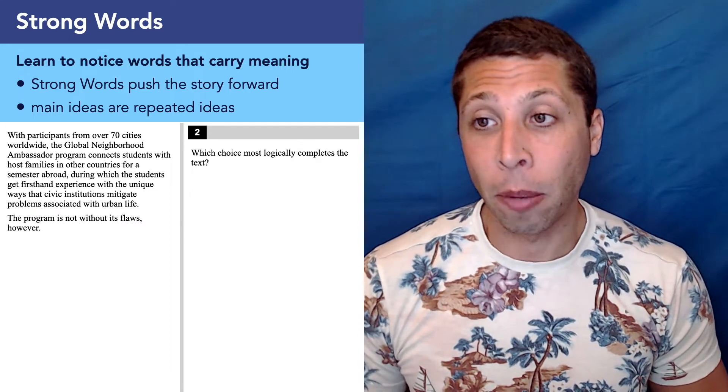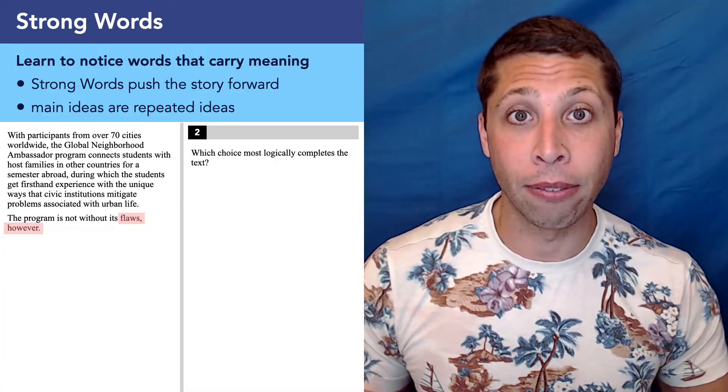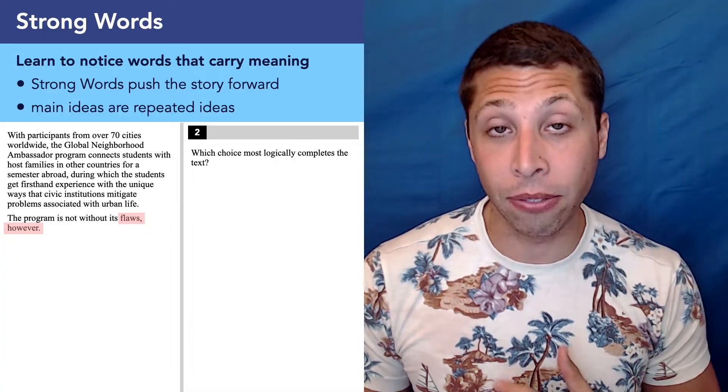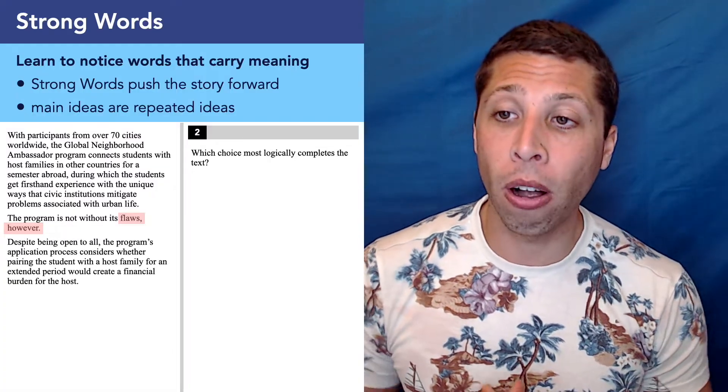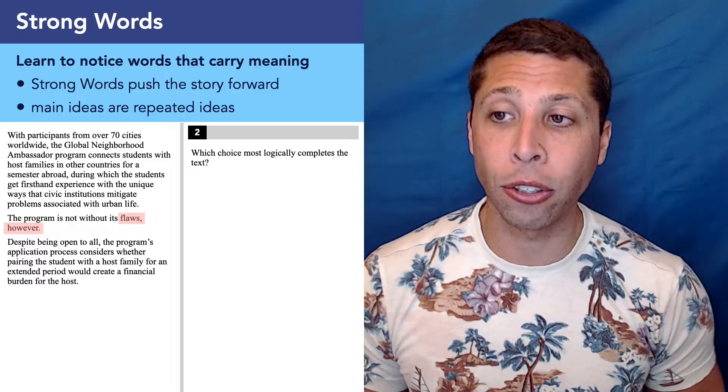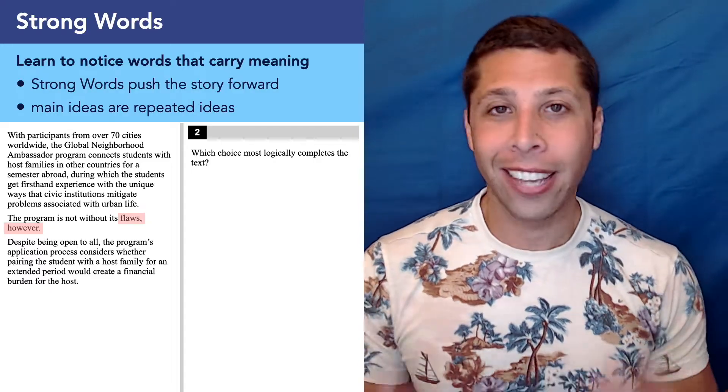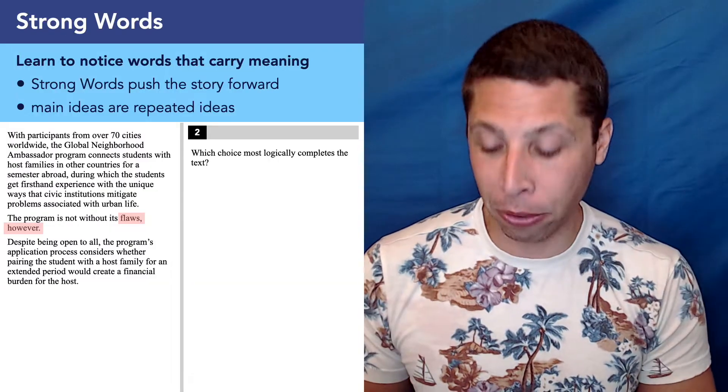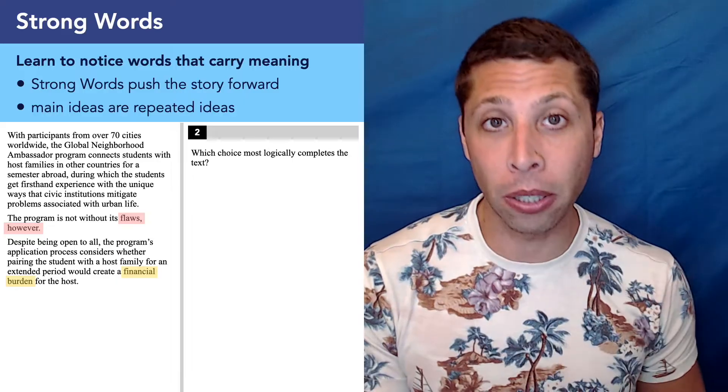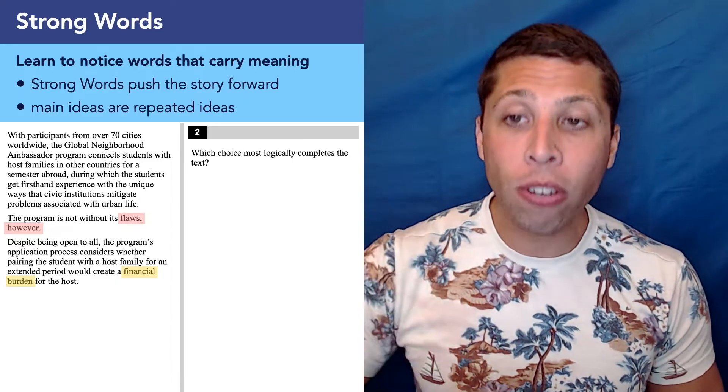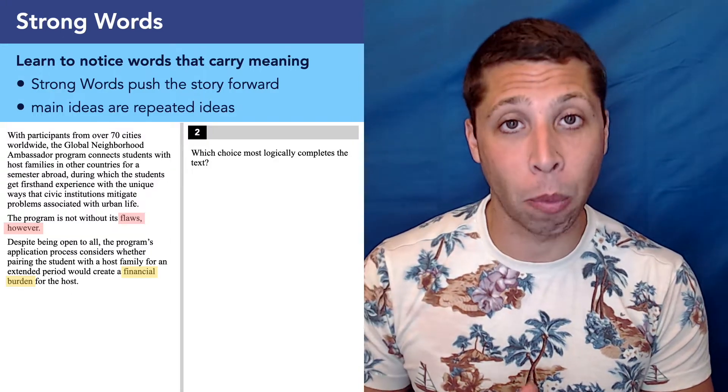But then we go to the next sentence. The program is not without its flaws, however. Well, clearly now we're talking about negative. So this is going to help with dumb summaries. Despite being open to all, the program's application process considers whether pairing the student with a host family for an extended period would create a financial burden for the host. Again, lots of house cat stuff. They're repeating what the program does, but they do end with the strong phrase, financial burden. So again, it's negative. That's helpful. But it's also adding this idea of money, finances into the mix. That's probably going to matter when we sort through the choices.